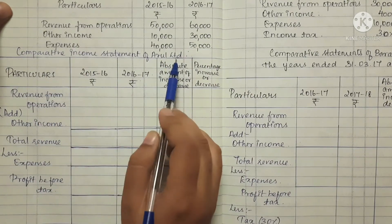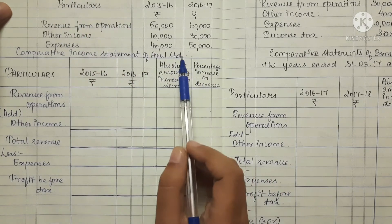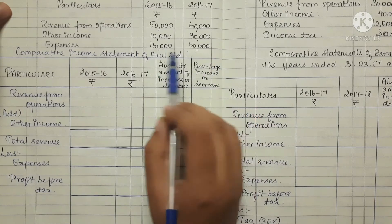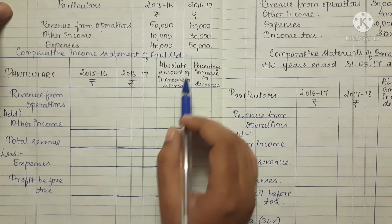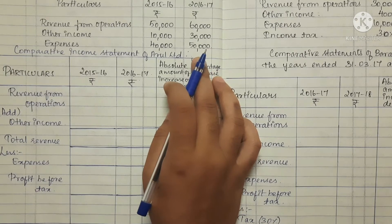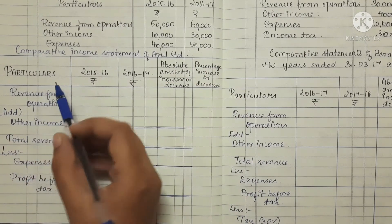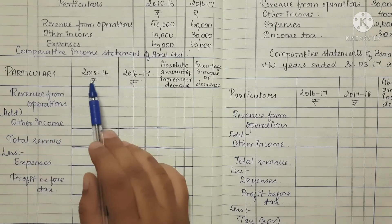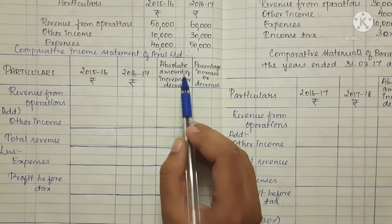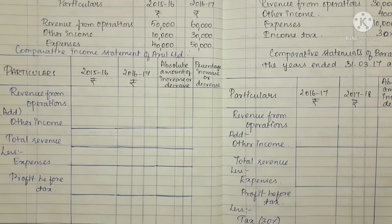Comparative income statement of Arul Ltd. The columns are: particulars, 2015–2016, 2016–2017, absolute amount of increase or decrease, and percentage increase or decrease.